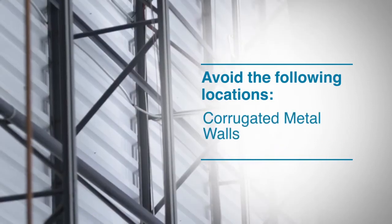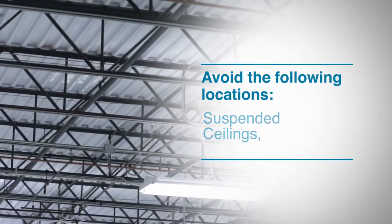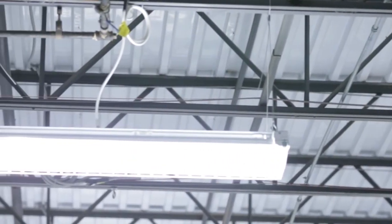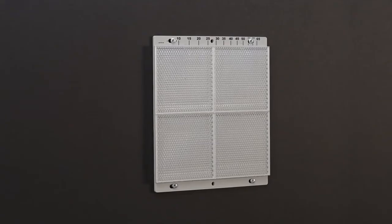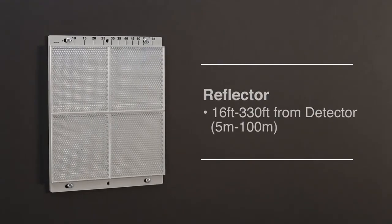Avoid mounting the beam on corrugated metal walls, external building sheathing, suspended ceilings, and steel web trusses, as these surfaces tend to shift with temperature or humidity changes. The reflector needs to be mounted anywhere from 16 to 330 feet from the detector.